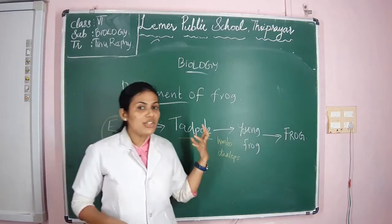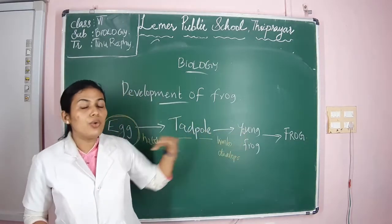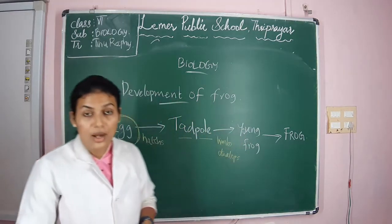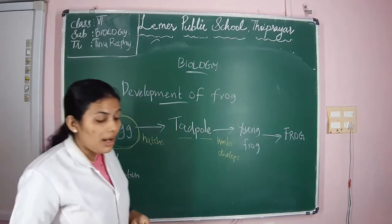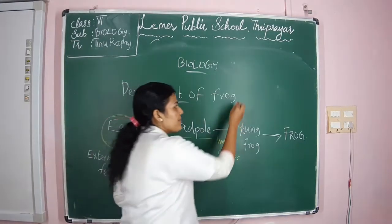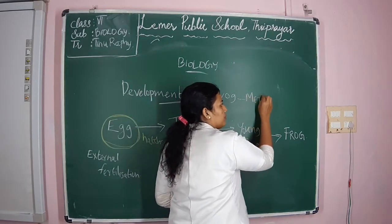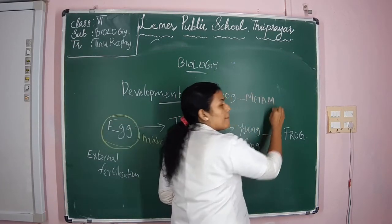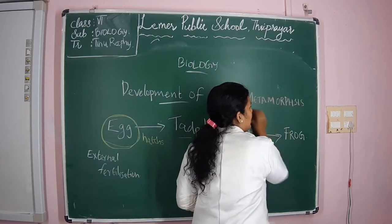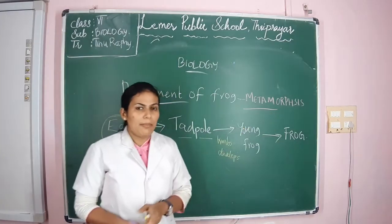The transformation of larvae into adult through various stages of life is called metamorphosis.